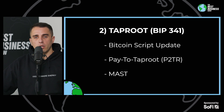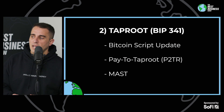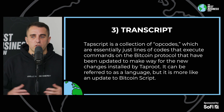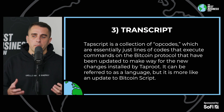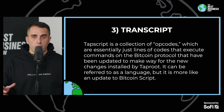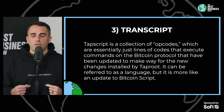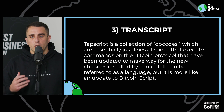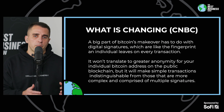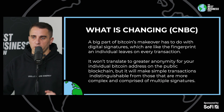The third component is around smart contracts, and specifically something called TapScript. TapScript allows us to look at a collection of opcodes — essentially lines of code that execute commands in the Bitcoin protocol — that have been updated to make way for the new changes installed by Taproot. It allows for much more expressiveness and composability with Bitcoin, bringing us closer to the ability to not just use Bitcoin as a pure payment system but to have it do other things. That is why people are very excited.